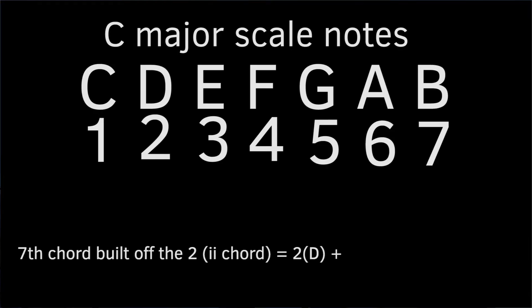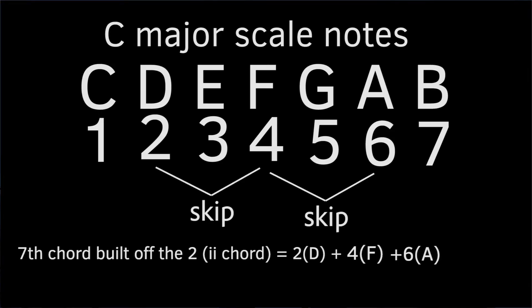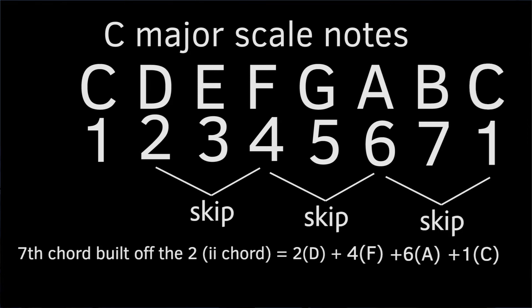It's the same exact formula for constructing a chord off of any of the degrees. You start on the root — for example, the 2 — skip a note to the 4, skip a note to the 6, skip a note to the 1. You've got your 1, 3, 5, and 7 of your next 7th chord.